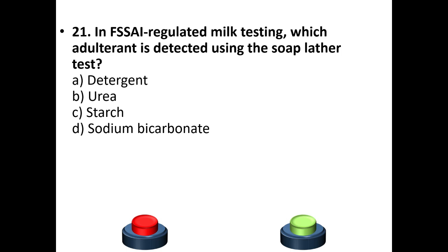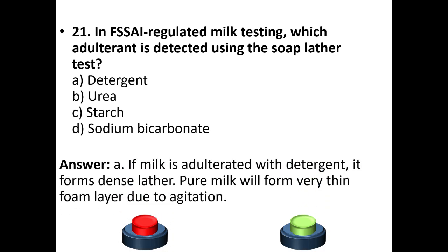Question 21: In FSSAI regulated milk testing, which adulterant is detected using the lather test? Options: detergent, urea, starch, sodium bicarbonate. The answer is option A: Detergent. If milk is adulterated with detergent, it forms dense lather. Pure milk will form only a very thin foam layer due to agitation.